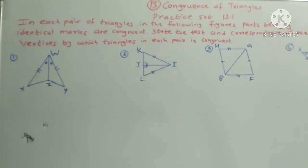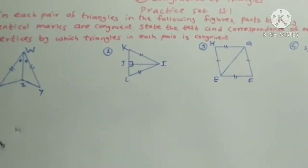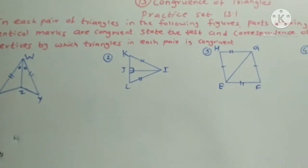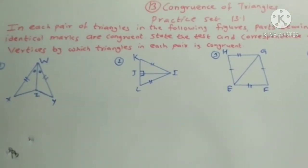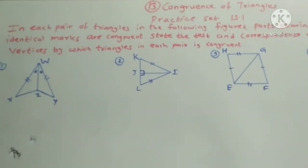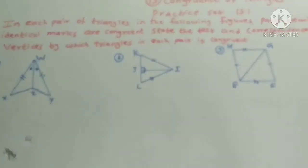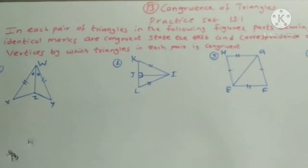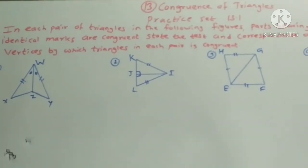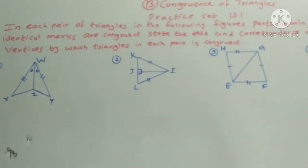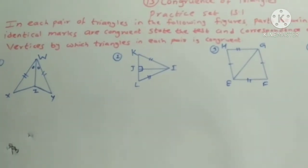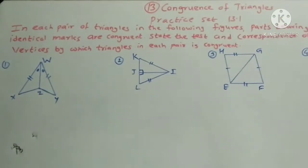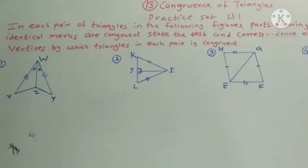Welcome students. In this video, we will start the examples of practice set 13.1. In each pair of triangles in the following figure, parts bearing identical marks are congruent. We will state the test and the correspondence of vertices while the triangles in each pair are congruent.